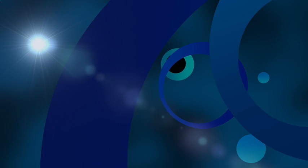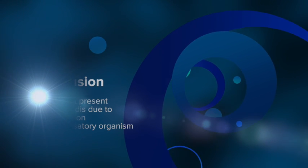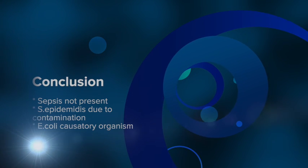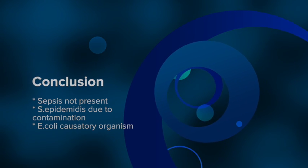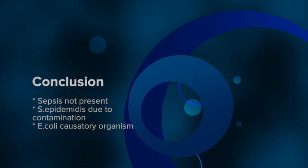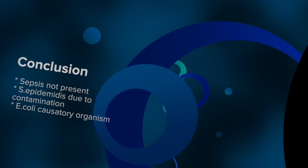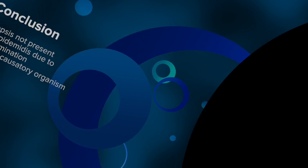Overall, it is expected that sepsis is not present in the patient and that the positive blood culture result was due to contamination, yet further testing is required. Furthermore, it is expected that E. coli was the primary cause of the patient's urinary tract infection.